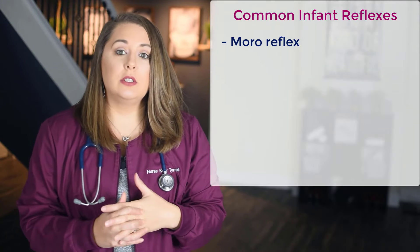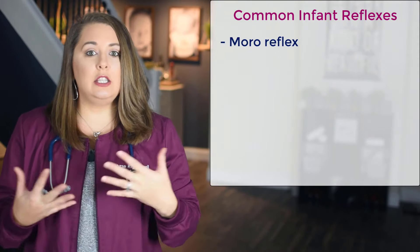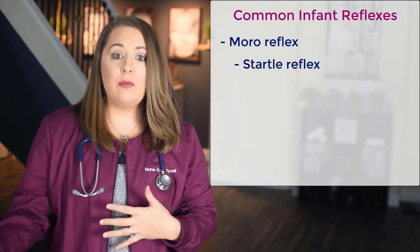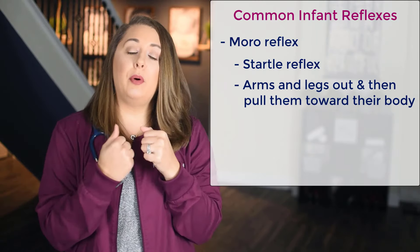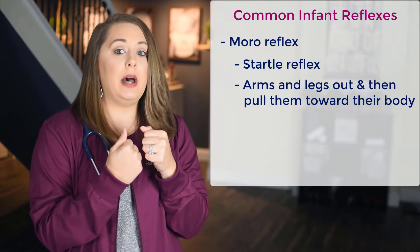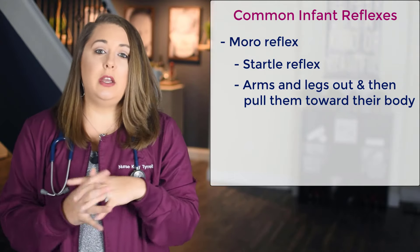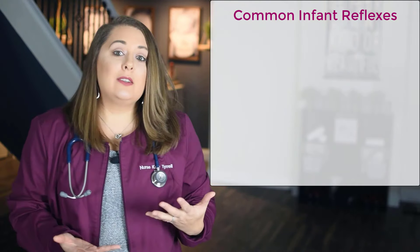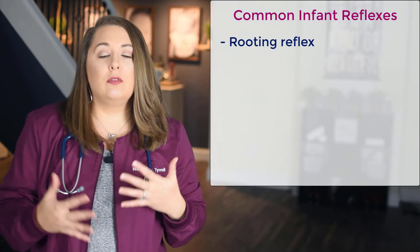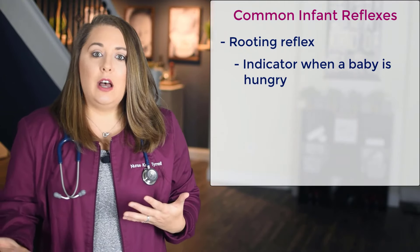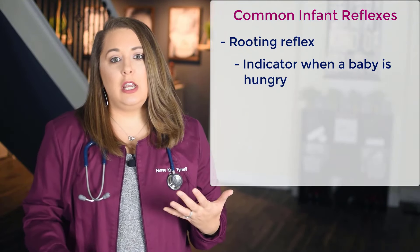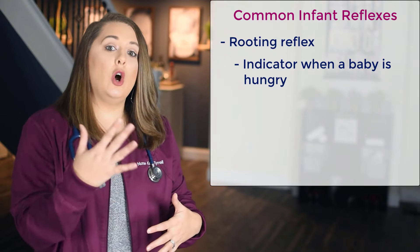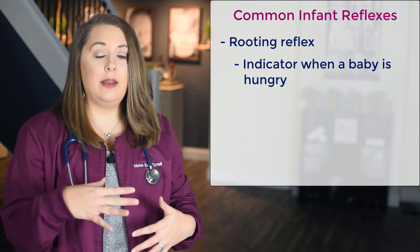Next is the Moro reflex, also known as the startle reflex. When the infant is startled by a loud noise, they will throw their arms and legs out and then pull them towards their body. This reflex should disappear around the three to four month mark. Next is the rooting reflex, which is a really good indicator of when a baby is hungry. If you stroke the infant's cheek or mouth, they'll turn towards your finger, open their mouth, and try to suck on it.